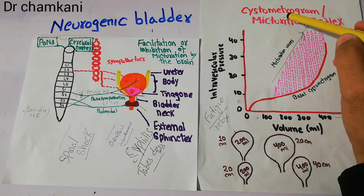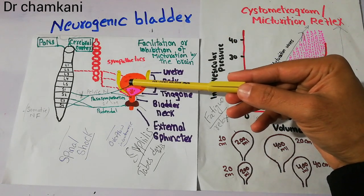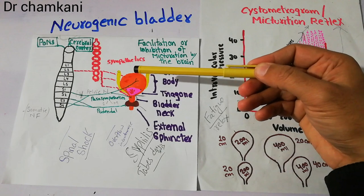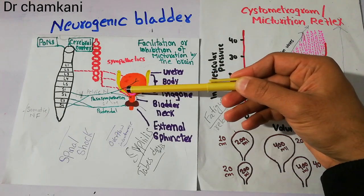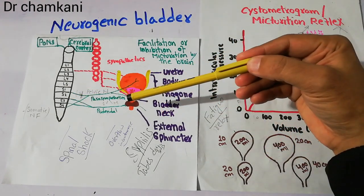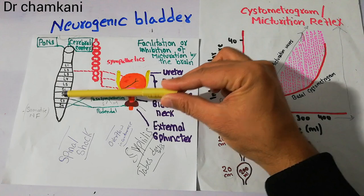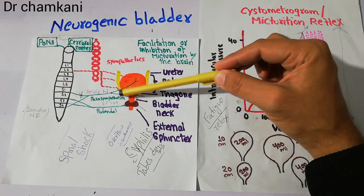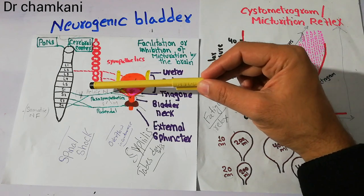The micturition reflex starts when urine collects in the bladder. As urine starts collecting, sensory stretch receptors — specifically present in the posterior urethra — get stretched with the increasing volume. They send signals to the spinal cord, which then sends signals back toward the bladder, causing it to contract. The nerves carrying signals toward the spinal cord are sensory nerves, and those bringing signals back toward the bladder are motor nerves. Both sensory and motor nerves travel through the pelvic nerve.